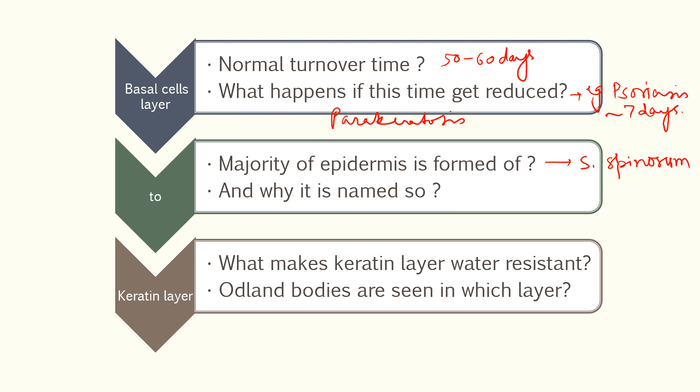One important thing — why is it named so? The prickle cell layer is called stratum spinosum. It's named so because of its arrangement. The keratinocytes are held together with the help of desmosomes, and this gives the appearance of prickles or spines, hence the name stratum spinosum, or prickle cell layer.